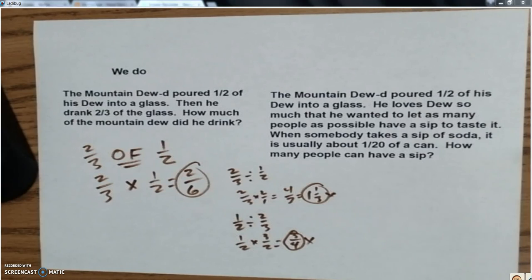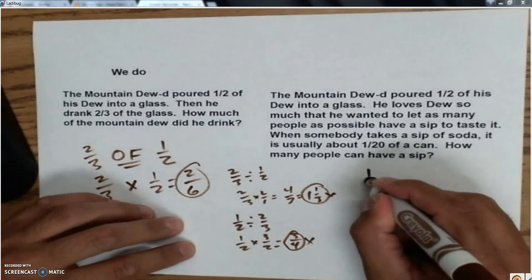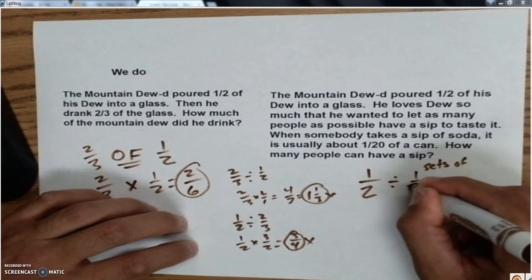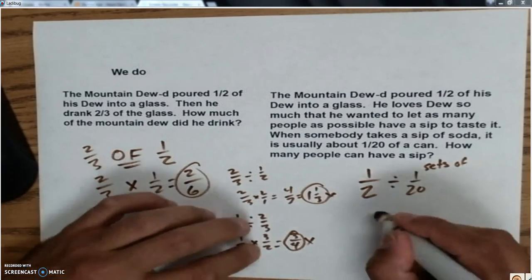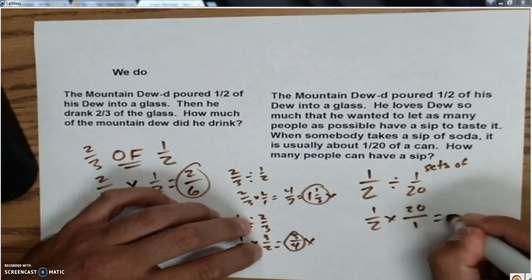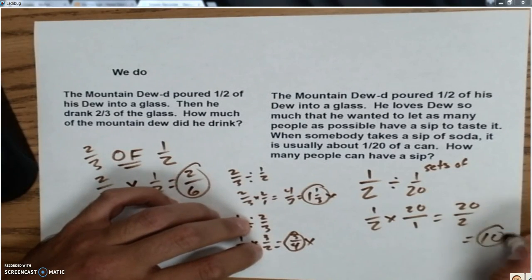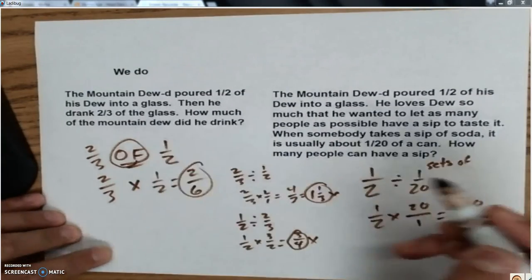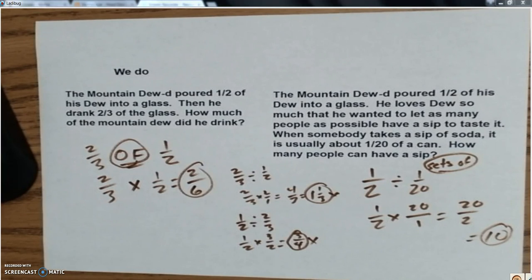Division situations sound more like this. The Mountain Dew'd poured half of his dew into a glass, which we saw. And now a new situation I just made up. He loves dew so much, he wanted to let as many people as possible have a sip of it. When somebody takes a sip of soda, they usually sip about 1/20 of a can. How many people can have a sip? So now I'm taking my half a dew and I'm making groups of or sets of or pieces of 1/20 of a dew. Because when somebody drinks something, that's how much they drink. And so that means 1/2 times the reciprocal, which means 20/2, which means ten people can have a sip. Is that reasonable? I think so. If you had half a soda and you just passed it around until everybody had a sip, something like ten people, that's a pretty reasonable amount. So that's the magic thing, right? 'Of' means multiply. If you're making sets of, that means divide. That's what I hope you got out of the mini lesson.